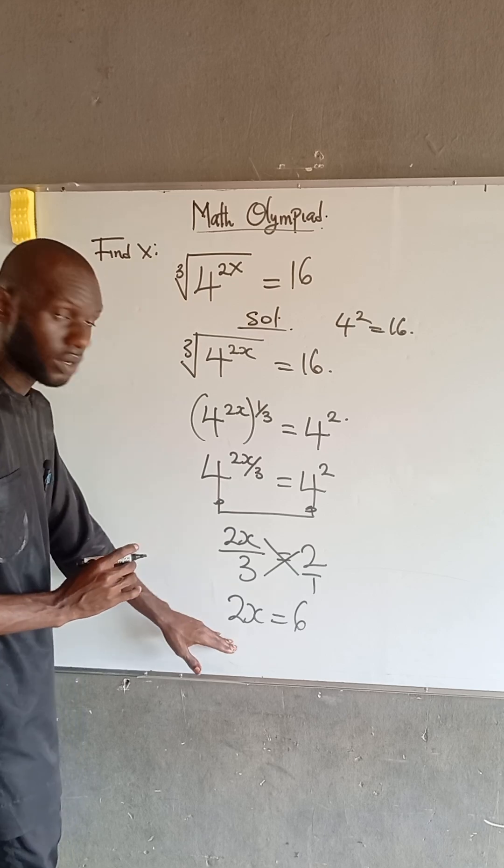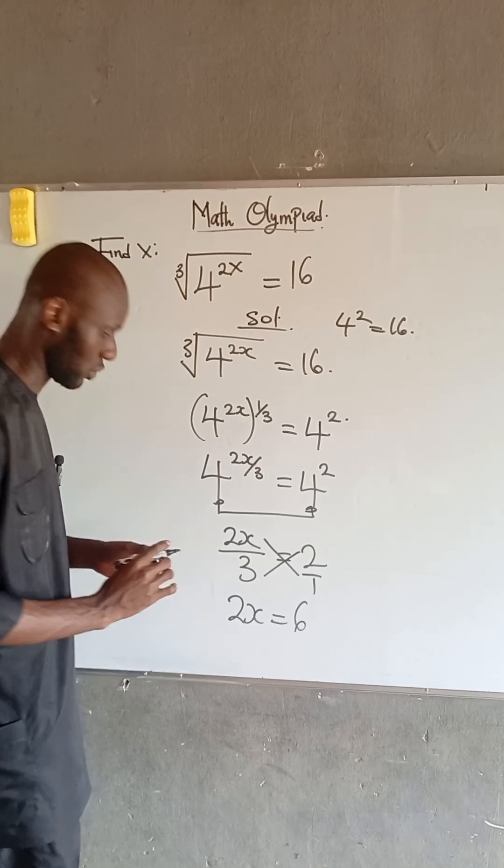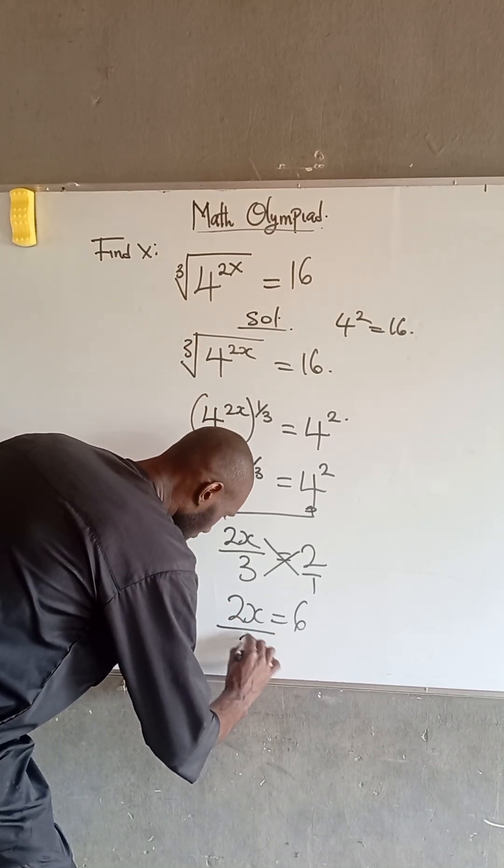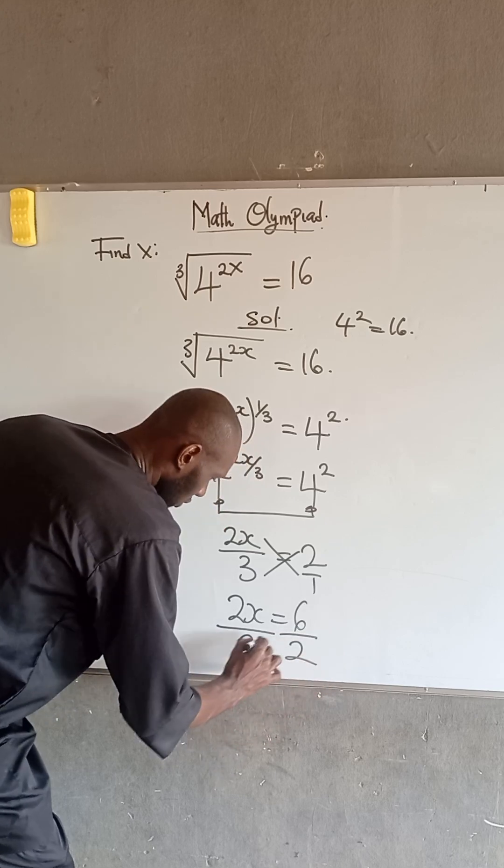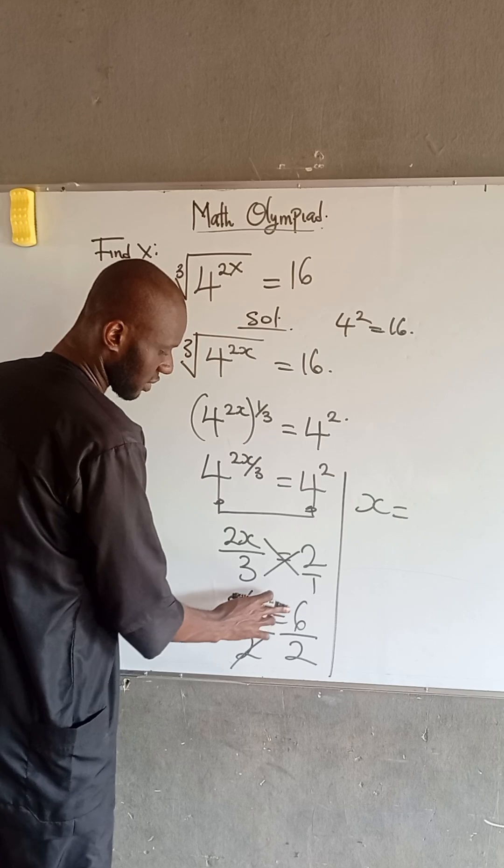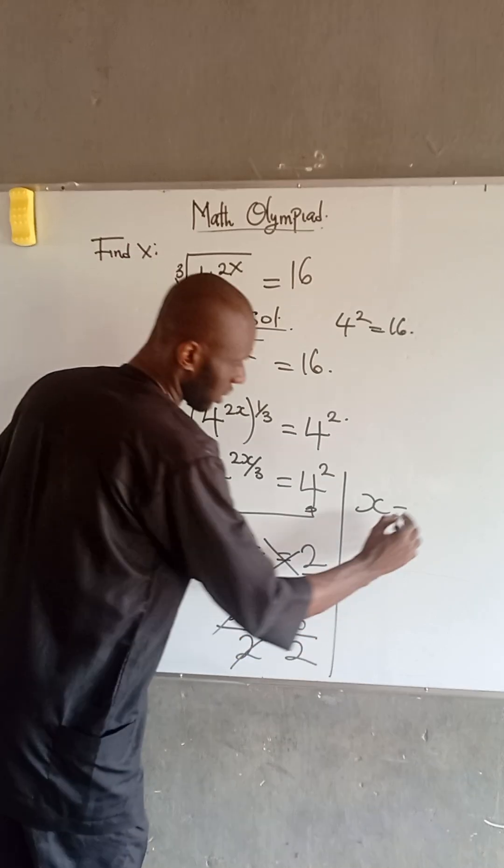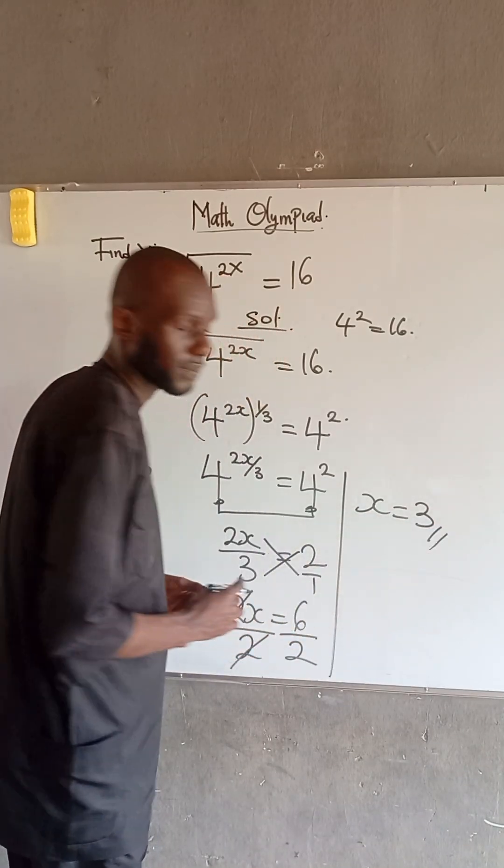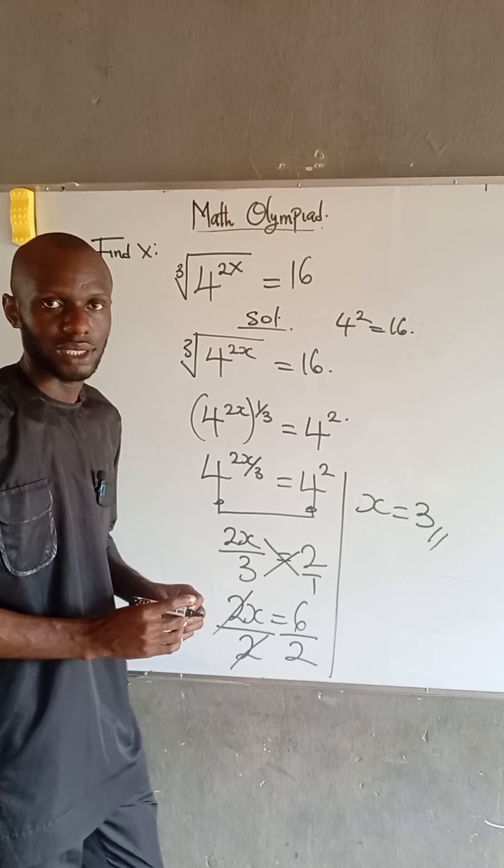Now, to obtain the value of x, we divide both sides by 2. So we divide the left-hand side by 2 and the right-hand side by 2. Therefore, we have that x is equal to 6 divided by 2, which is equal to 3. So the value of x is equal to 3.